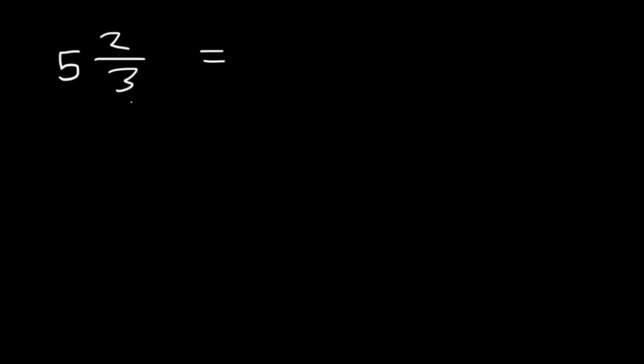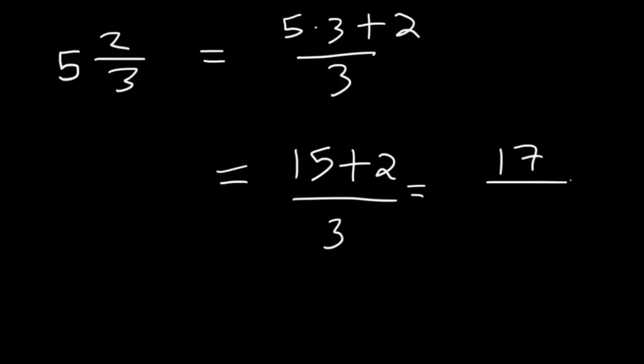You need to know that the improper fraction will have the same denominator, which is 3. That's not going to change. On top, you need to multiply 5 and 3, and then add 2. So, it's going to be 5 times 3 plus 2. Now, 5 times 3 is 15, and 15 plus 2 is 17. So, the answer is 17 over 3.